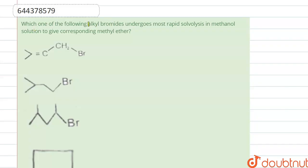Hello everyone. Here the question is: which one of the following alkyl bromides undergoes most rapid solvolysis in methanol solution to give corresponding methyl ether?